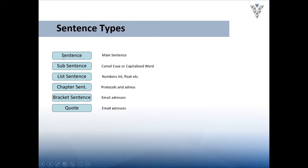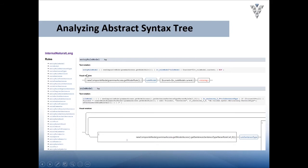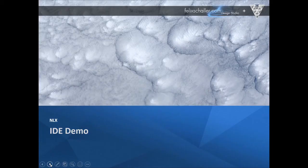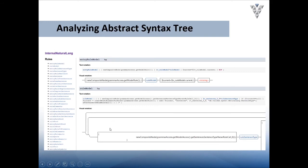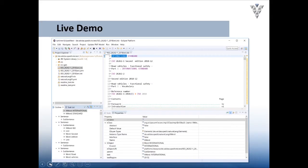One hierarchy higher, we have sentences, sub-sentences, list sentences, chapter sentences, bracket sentences, and quotes. Quotes are just not parsed internally — for instance, if you want to include source code in your document, you can quote it out and it's taken as one string without internal parsing. There is also a modeler that can display the results of the abstract syntax trees, showing how the hierarchies are built up.